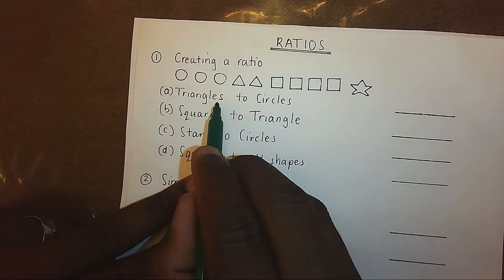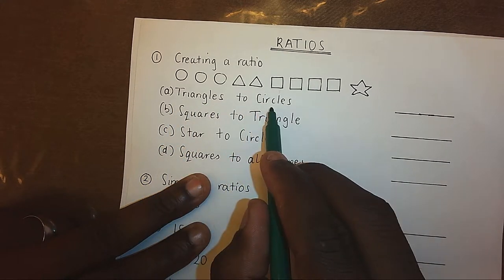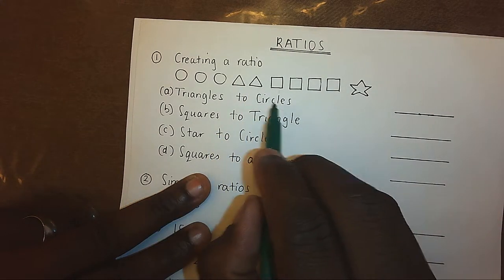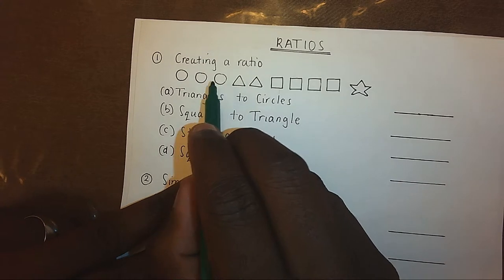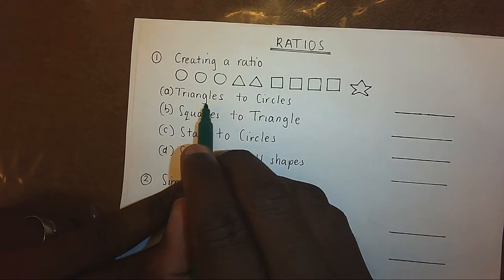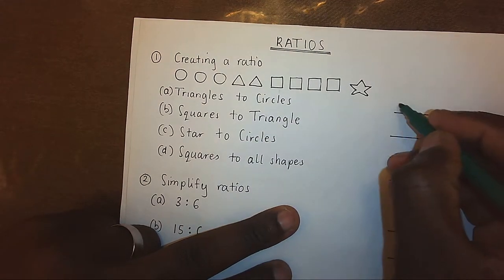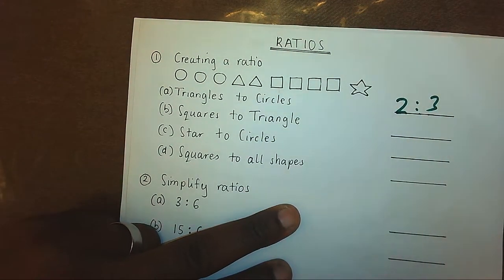Triangles to circles. Now let's look at triangles. We have 1, 2, and the circles, we have 1, 2, 3. That means the ratio, triangles to circles, will be 2 to 3.